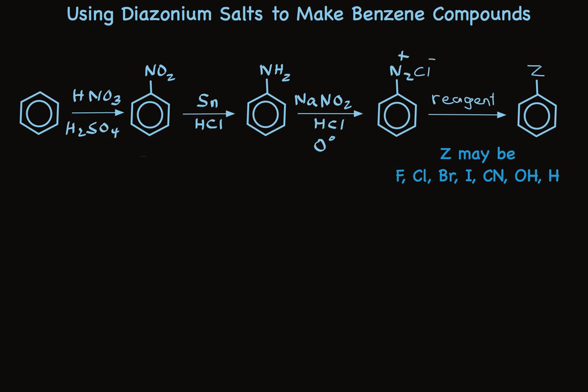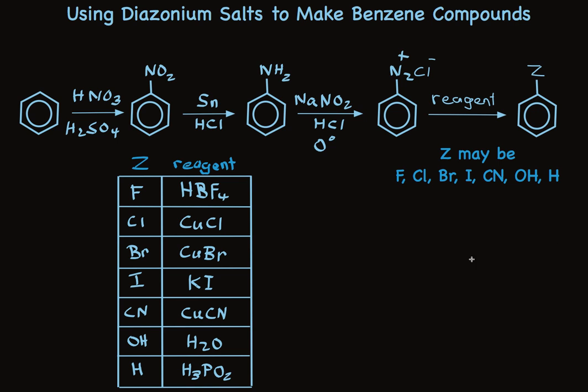So there's a four-step sequence: putting the NO2 group on, reducing it, converting it to the diazonium salt, and then treating with a reagent. I've put the magic reagents in a table — the left column shows the substituents you can put on the ring, and the right column shows the reagents you use to do that.